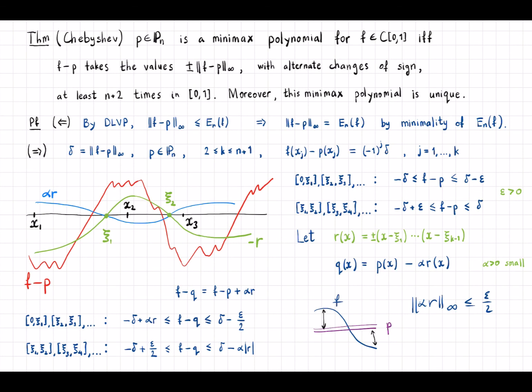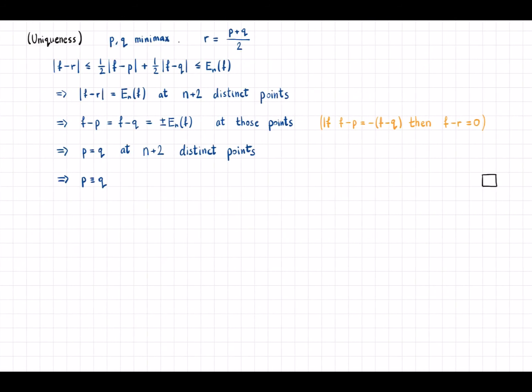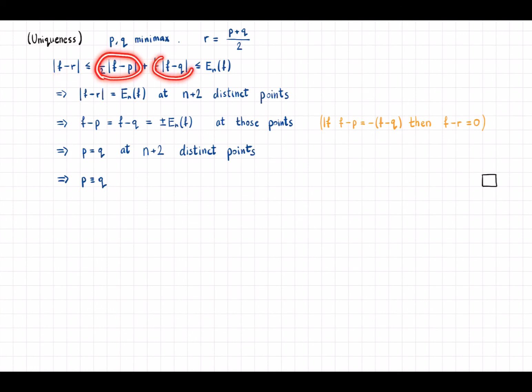Finally, we prove the uniqueness part. Suppose we have two minimax polynomials p and q; define a third polynomial r as their average. Looking at the error between f and r, we can use the triangle inequality to show that ‖f minus r‖ is not larger than the error of the minimax polynomial, which shows that r is also a minimax polynomial.